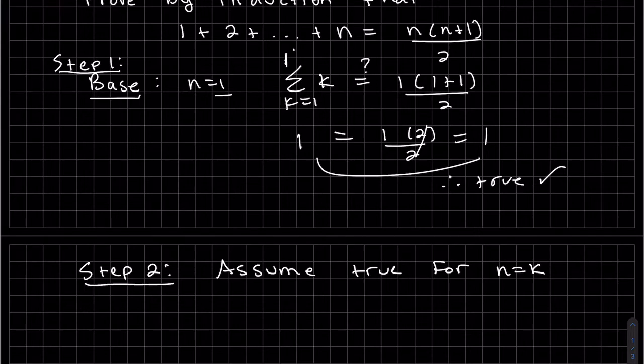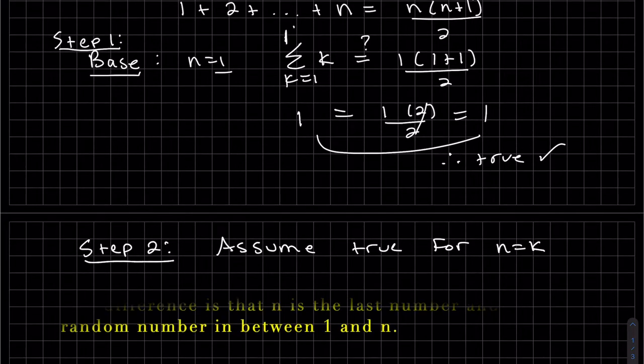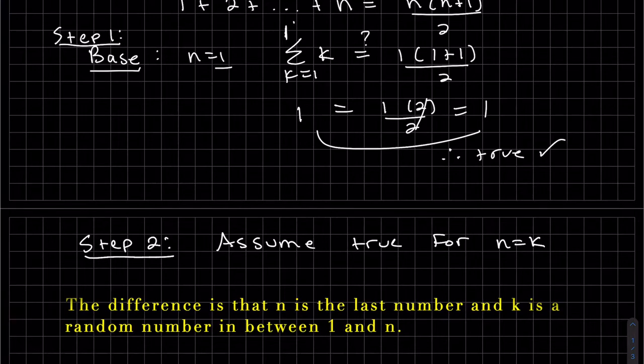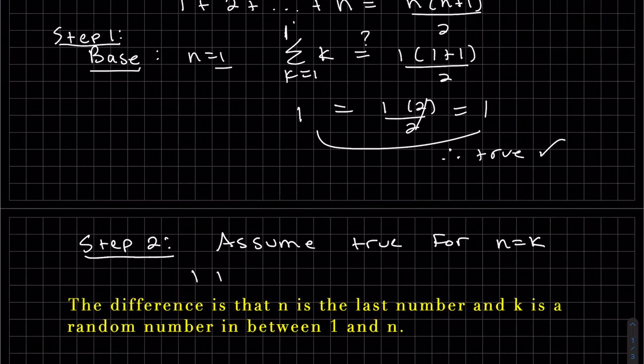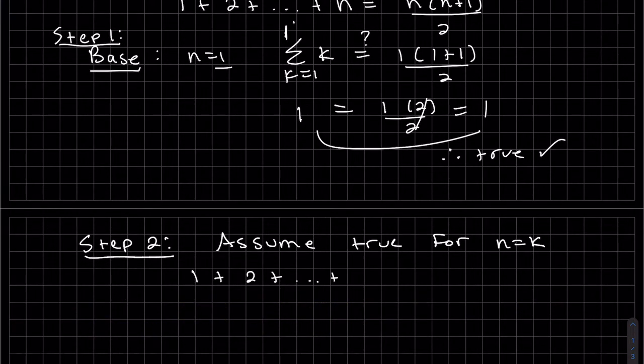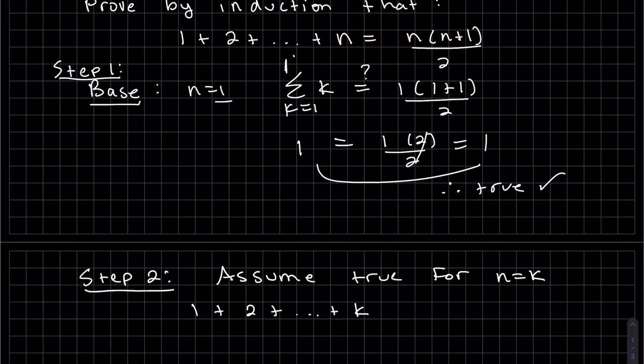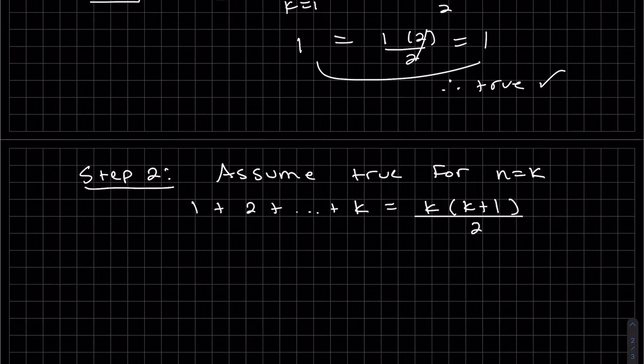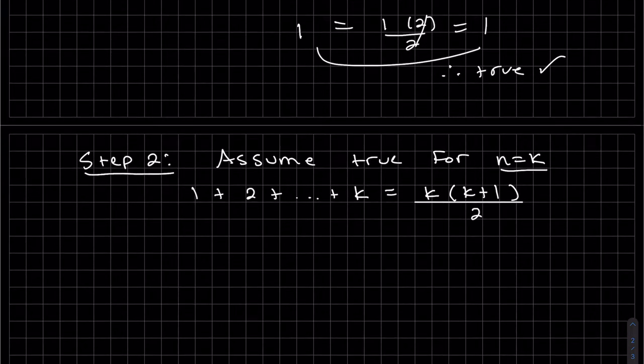I know this seems like a silly step, but we're going to assume it's true for n equals k. So it's the same statement, except it's a k instead of an n. So 1 plus 2, and that changes to k. Again, I know this is what we're trying to prove, but we're assuming it's true for the kth one. That's like the one that needs to fall in order for our next one and all the others to be true.